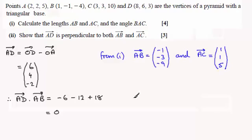And if we do much the same again when it comes to AD dotted with the vector AC, we're going to have 6 times 1 which is 6, 4 times 1 which is 4, and then minus 2 times 5 is minus 10. So again, 0, which is good.